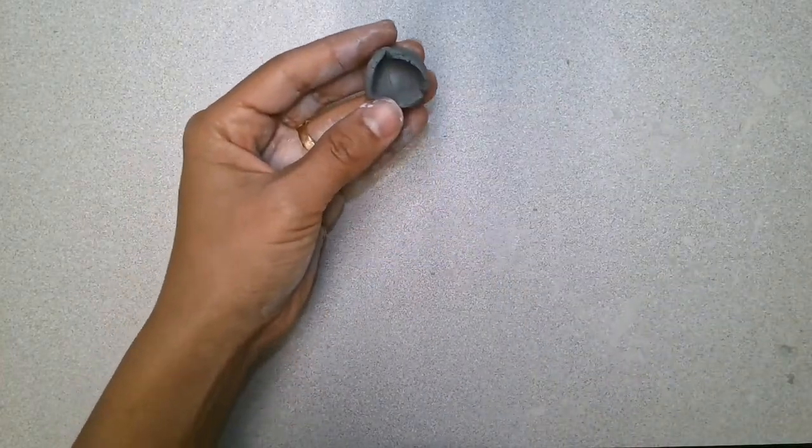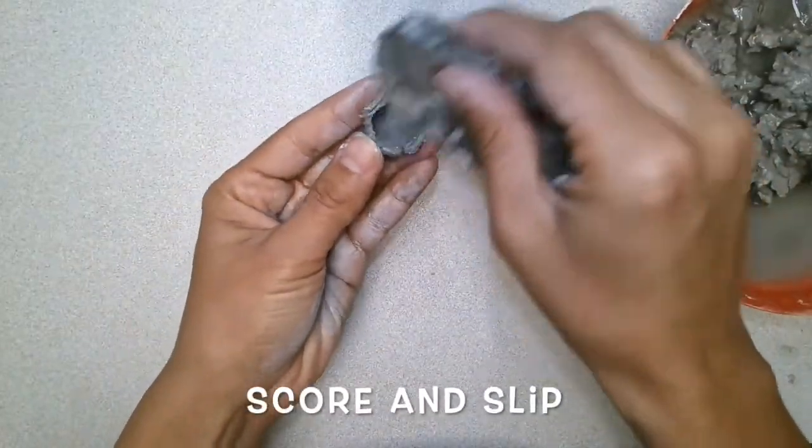Before I score and slip it together, they're like tiny miniature pinch pots. I'm going to score with my serrated rib.